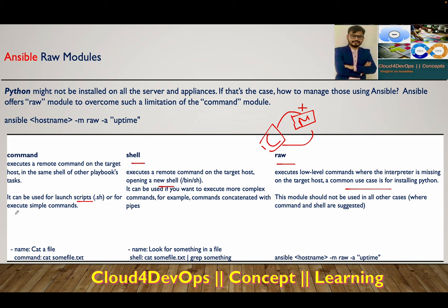The basic difference: command is used to launch scripts or execute simple one-liner commands. Shell is used for more complex commands, such as commands concatenated with a pipe — combining multiple commands into one. Raw module is used only when command and shell are not suitable — for example, when the interpreter is missing. For simple cases like reading a file with cat, you'd use command or shell.